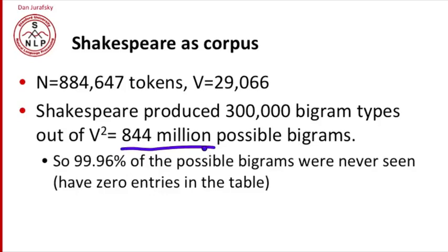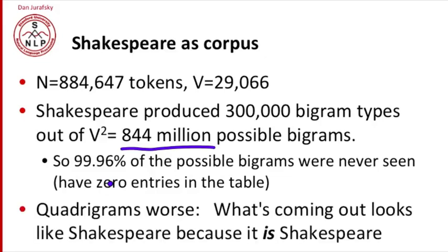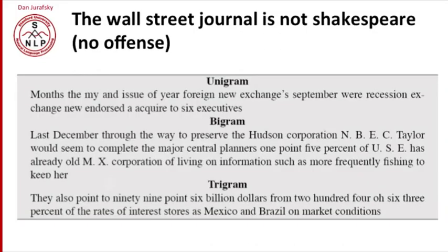So if we multiply that out, 99.96% of the possible bigrams were never seen. Those are going to have zero entries in the bigram table. Vast number of zeros. So that's just bigrams. Quadrograms are even worse. The reason why those quadrograms looked like Shakespeare is because those were actual Shakespeare sentences. Because following any particular quadrogram, really only one possible word could occur. It's such a small corpus as Shakespeare.